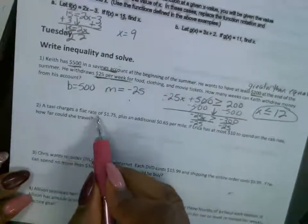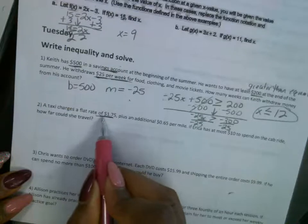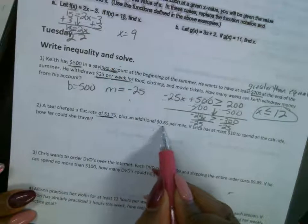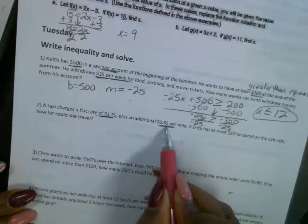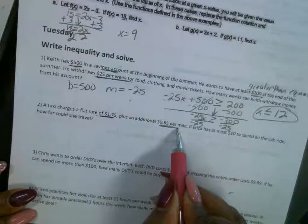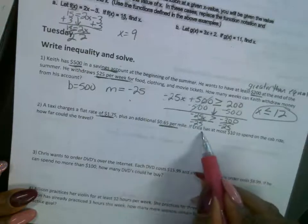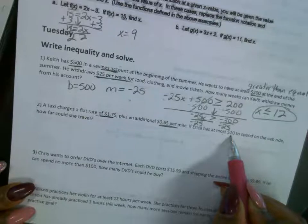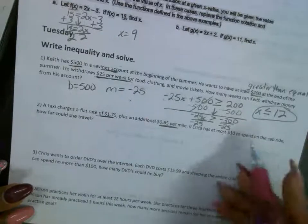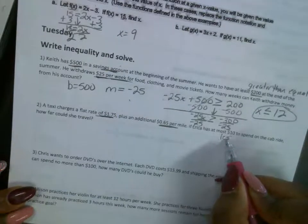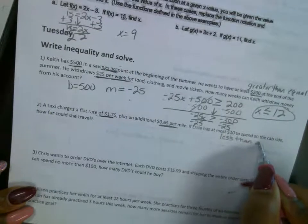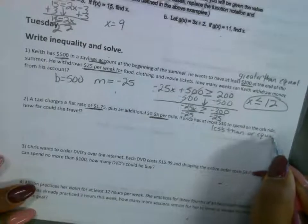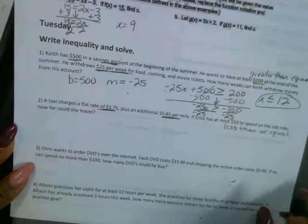A taxi charges a flat rate. See this? Again, that's a starting amount. Plus an additional $0.65 for every mile. That's a rate. Erica has at most $10. So you can't go over $10. That's the most that she has. So this is going to be less than or equal to. At the most, it's $10.